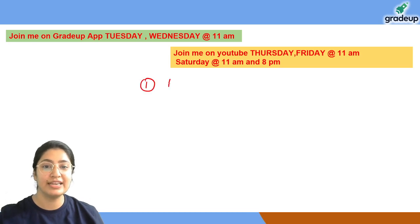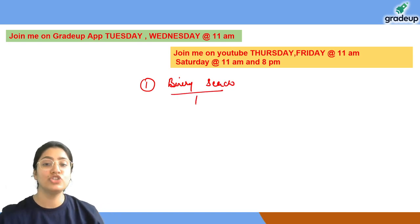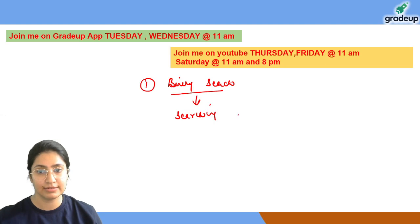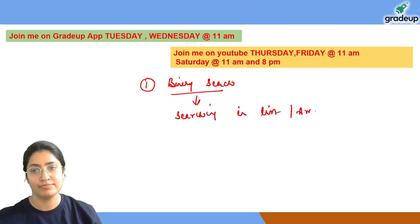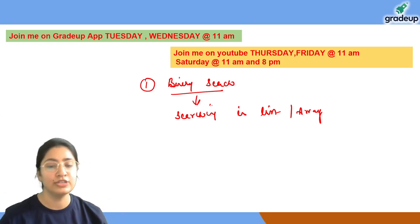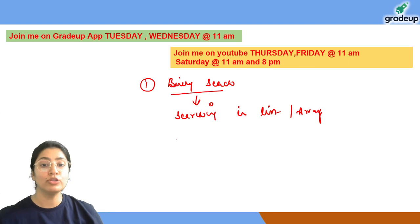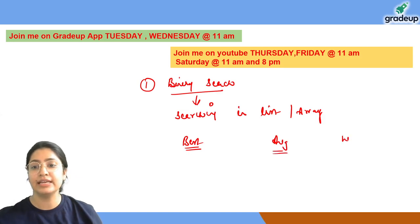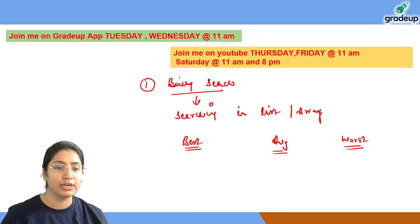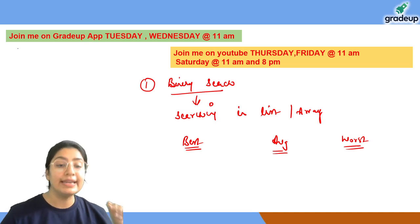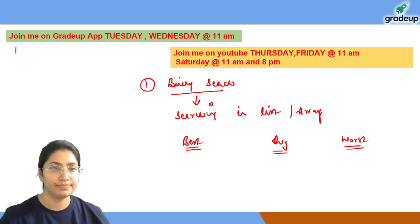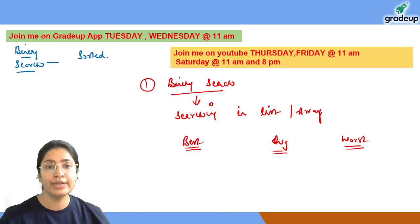First, let's understand what is the complexity of binary search. The name itself suggests this is a searching technique — searching means to find an element in a list or in an array. Please note that binary search works on data that is already sorted. So binary search always holds data which is already in sorted order.